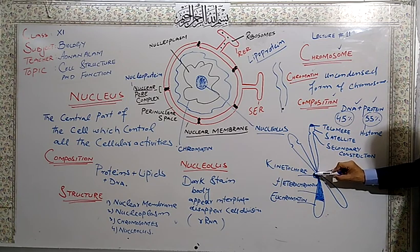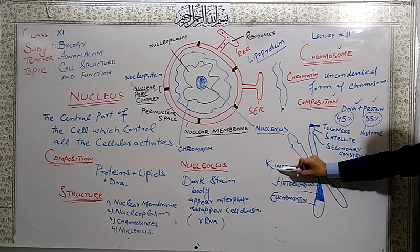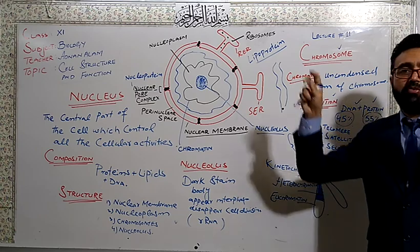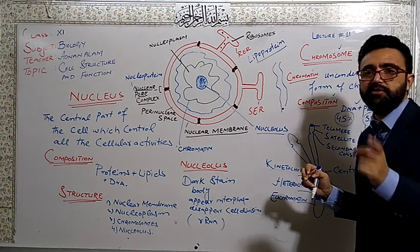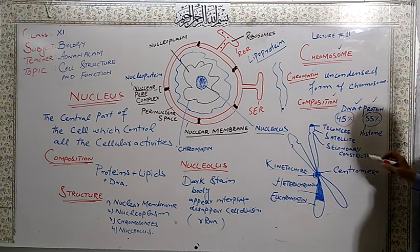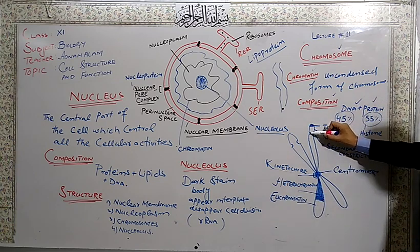With the help of kinetochore, it attaches to spindle fibers during the metaphase of cell division. This is called the secondary constriction, and above the secondary constriction there is a satellite part.